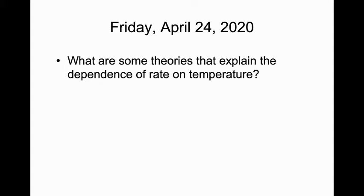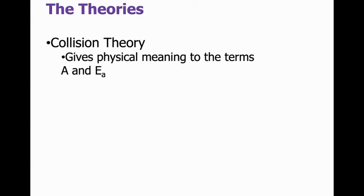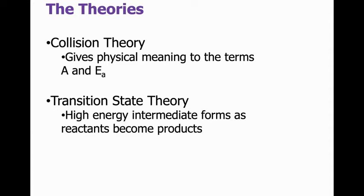Continuing on from Monday's video, there are two theories we'd like to discuss here. One is collision theory, and that will give us some physical meaning behind our frequency factor or pre-exponential factor A and our activation energy, E sub A. And transition state theory, which is a little bit more involved than the collision theory and helps us think about the high-energy intermediate that forms as reactants become products.